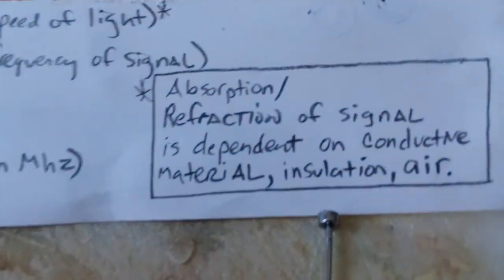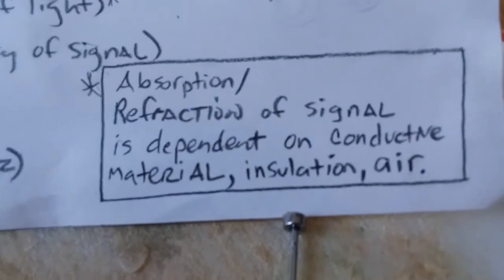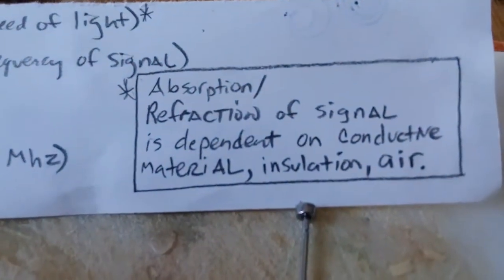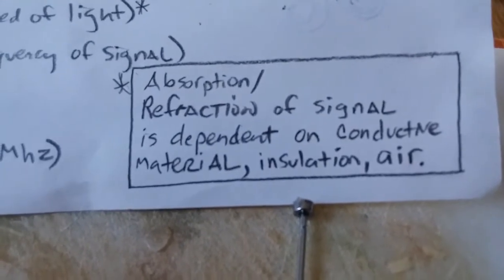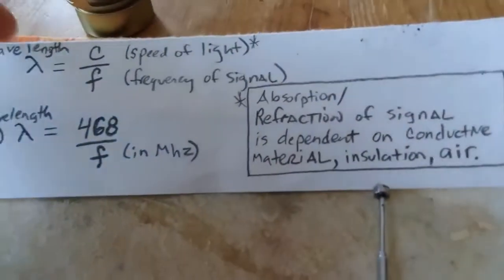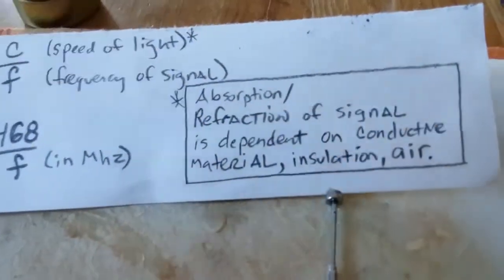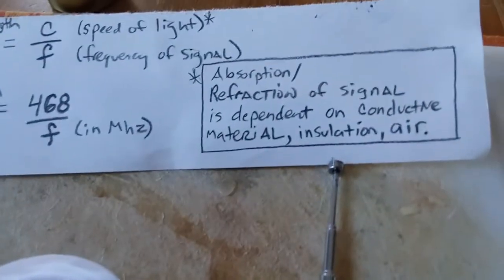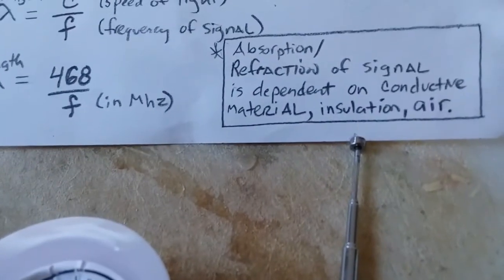However, in real world application, the speed of light is not in a vacuum in air, bouncing through the atmosphere. The absorption and refraction of this formula here is dependent on the conductive nature of the material. In our case, copper wire, any insulation around that wire, air density, moisture in the air, a whole variety of factors.